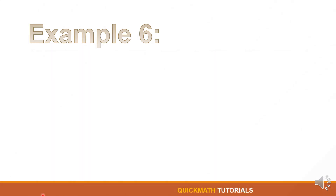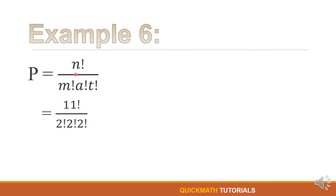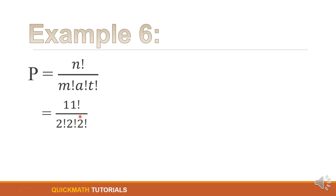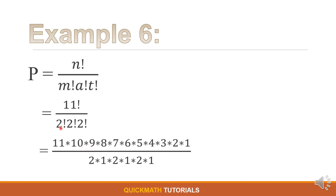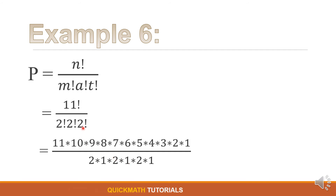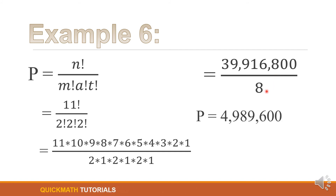Using the formula, P equals n factorial divided by M factorial times A factorial times T factorial. By substitution, n is 11 factorial, M is 2, A is 2, and T is 2. Simplifying, 11 factorial equals 11 times 10 times 9 down to 1, divided by (2 times 1) times (2 times 1) times (2 times 1). This equals 39,916,800 divided by 8, which is equal to 4,989,600.